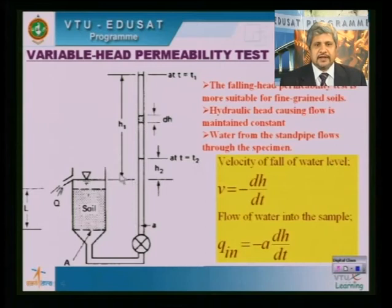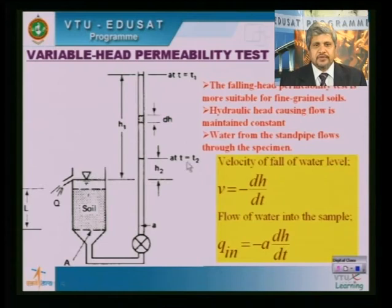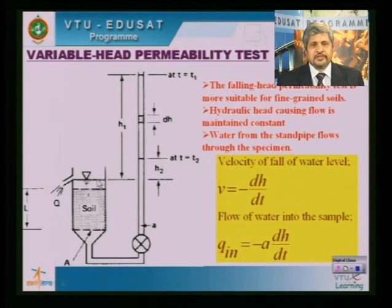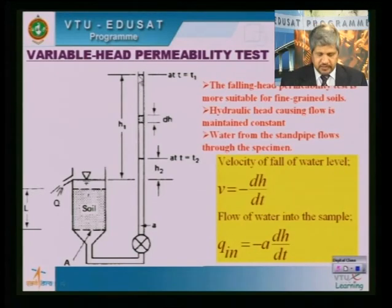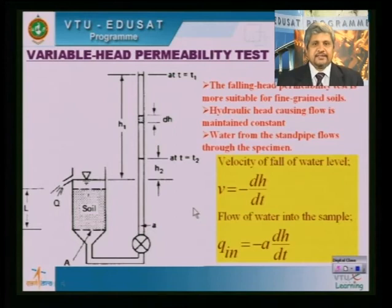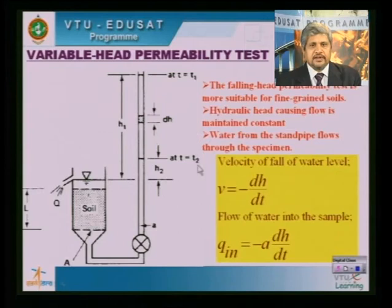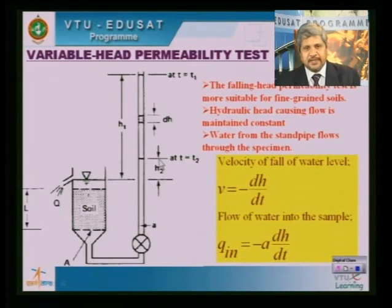Here you can see the schematic diagram. At time T1, the head causing the flow is H1. At time T2, the head is H2. The head is measured from the outlet of the permeameter to the top level of water in the tube. Given H1 and H2, and knowing the time difference — at time T1 the head is H1, and after a certain time interval T1 minus T2 it has fallen to H2 — the question is how to compute K.